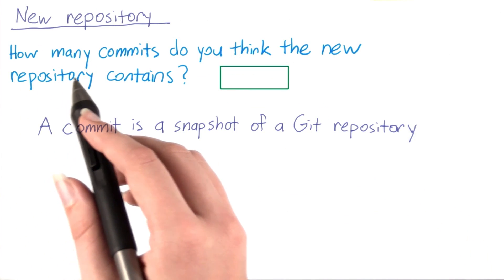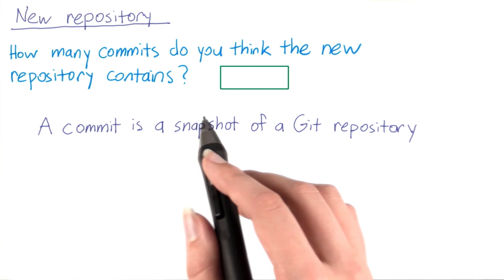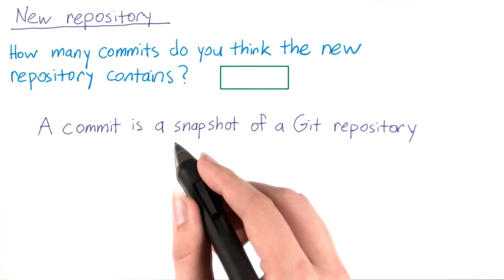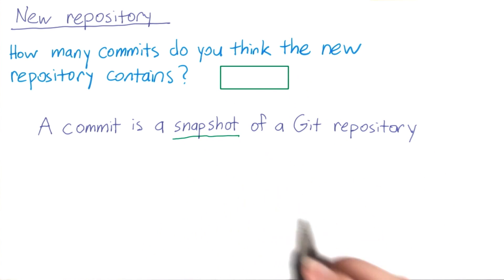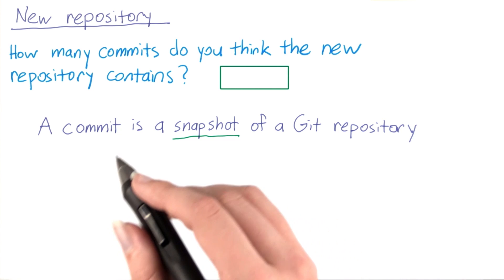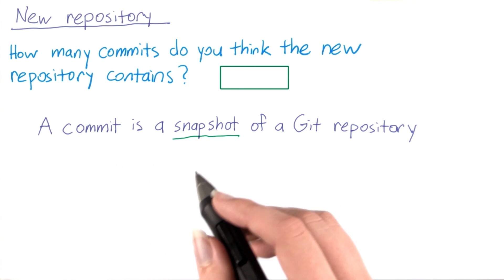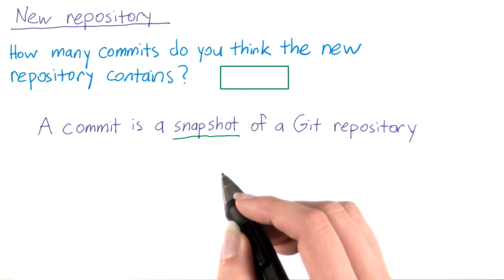How many commits do you think the new Git repository contains? Enter your answer in this box. Recall that a commit is a snapshot of a Git repository. If you're not sure how many commits it will contain, then just pick a number you think is reasonable.